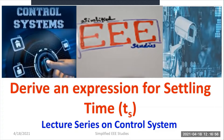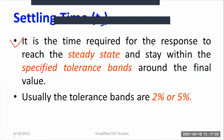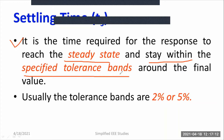First of all, let us understand what settling time means. It is the time required for the response to reach the steady state and stay within the specified tolerance band. Typically, we consider 2% and 5% as the tolerance bands — these are the commonly used tolerance bands.